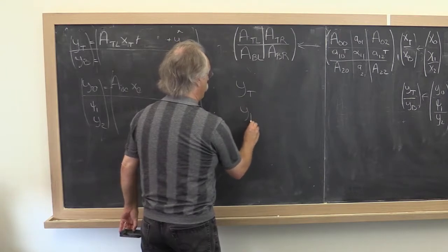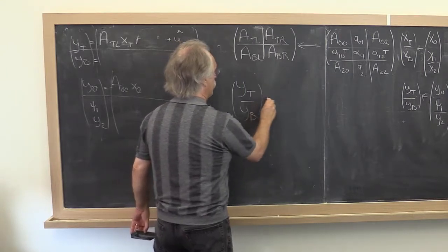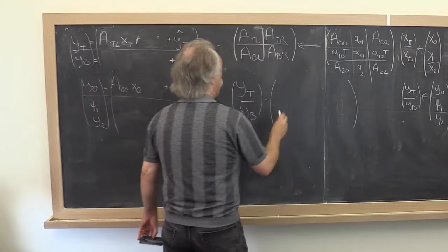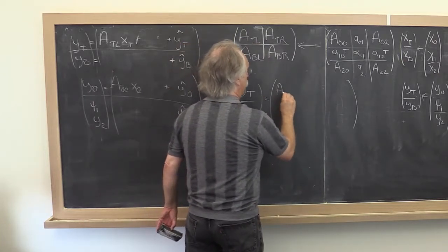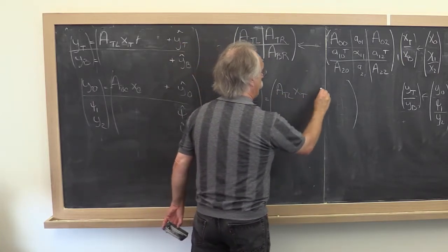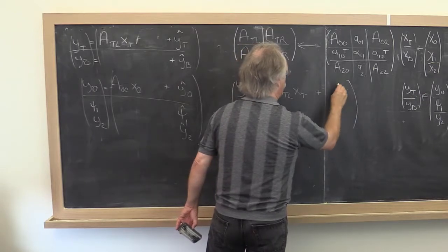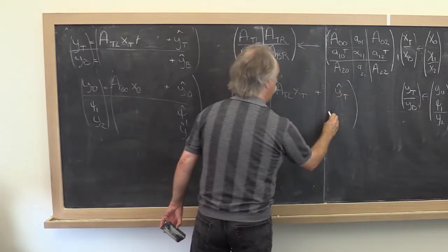So the state at the bottom of the loop, we can similarly start by saying we know that we have y top, y bottom is equal to a top left, x top, plus y top hat, and y bottom hat.